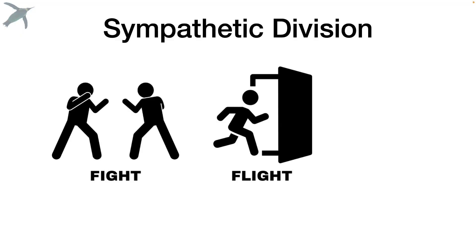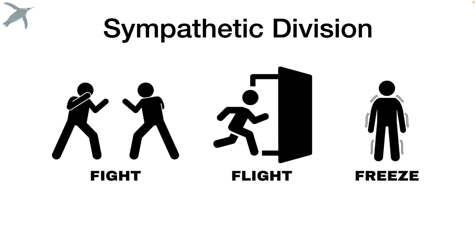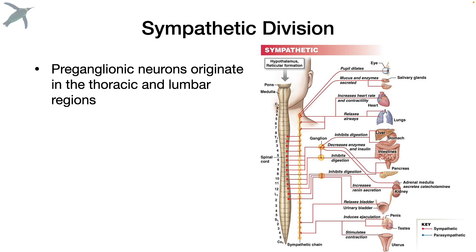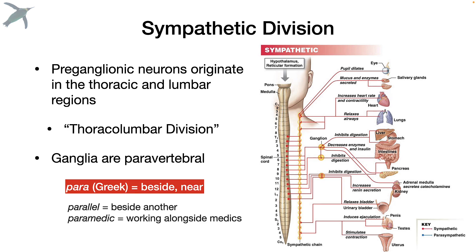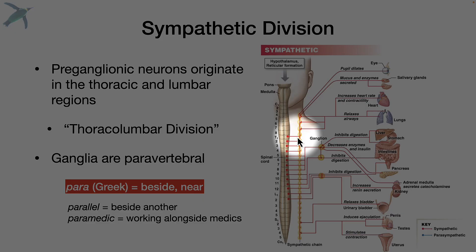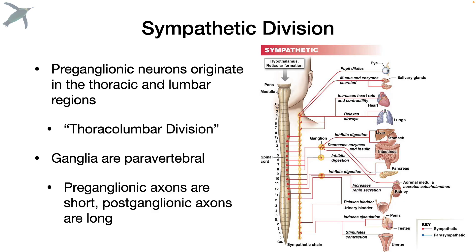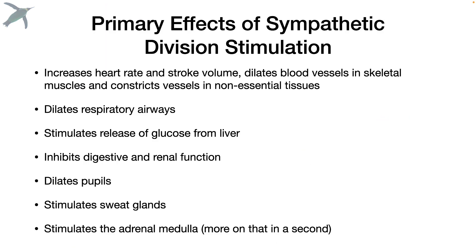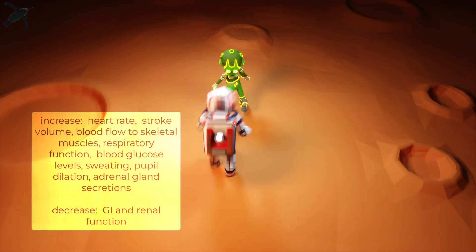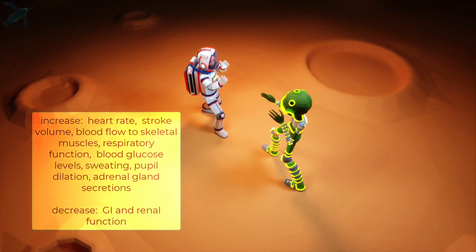The sympathetic division used to be known as the fight-or-flight response — now we've added freeze, so it's fight, flight, or freeze. Preganglionic neurons here originate in the thoracic and lumbar regions of the spinal cord, so you might see this referred to as the thoracolumbar division. The ganglia are paravertebral — para meaning beside or near, so these ganglia run right along the spinal cord. That means the preganglionic axons are short and the postganglionic axons are long. The primary effects include everything that happens to your body when you are under stress — things that are extremely important for your survival.